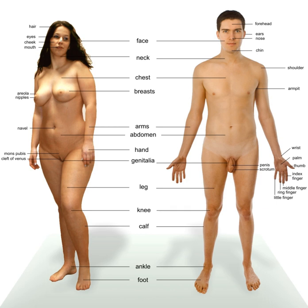During reproduction, a male can give either an X sperm or a Y sperm, while a female can only give an X egg. A Y sperm and an X egg produce a male, while an X sperm and an X egg produce a female. The part of the Y chromosome which is responsible for maleness is the sex-determining region of the Y chromosome, the SRY.